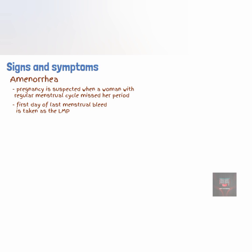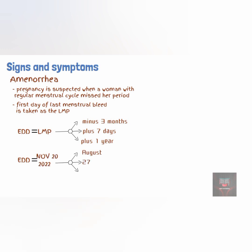To get the estimated delivery date from the LMP, minus three months, plus seven days, and plus one year to the LMP. For example, if the LMP is November 20, 2022, then the estimated delivery date (EDD) will be August 27, 2023.